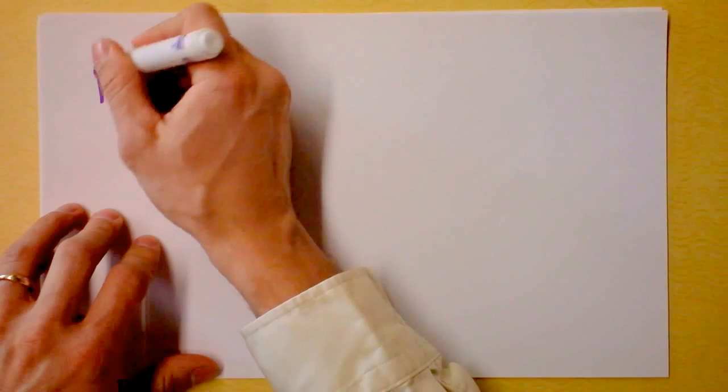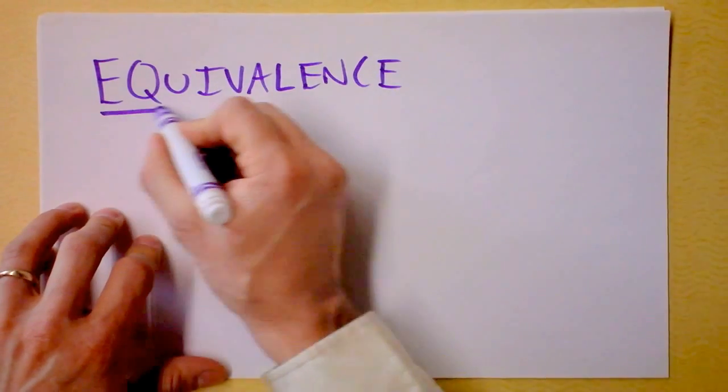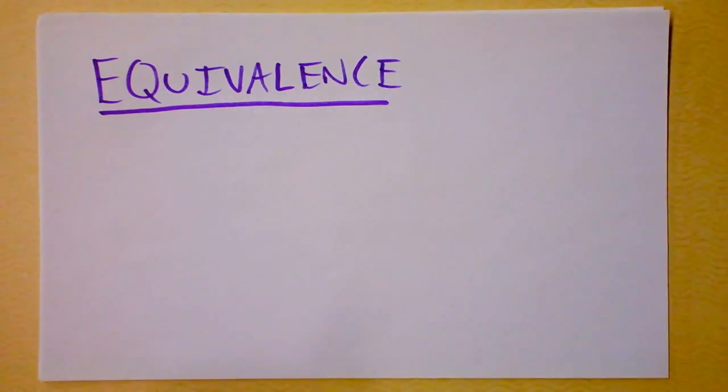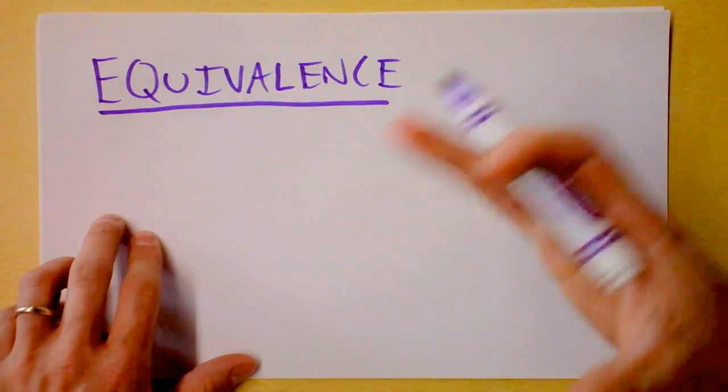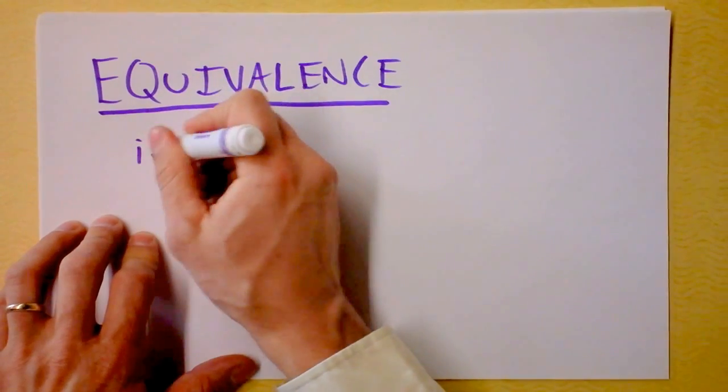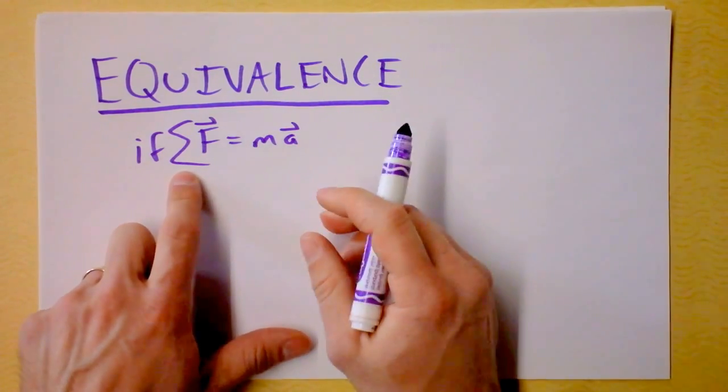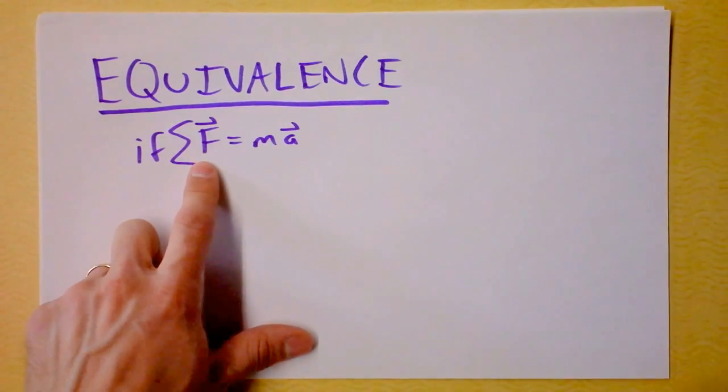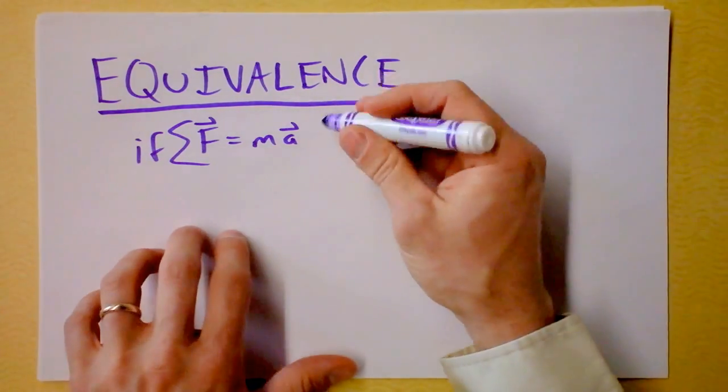So Einstein had two big things to say. One, he said there's equivalence. There are some other things that Einstein said that we're not ready to address yet. But we're going to talk in particular about something called special relativity, and his first statement was equivalence. He said that every law of physics is the same for every inertial reference frame. So this is our first statement of equivalence. If f equals ma, this statement says that Newton's laws are in full operation, so an object with no net force on it does not accelerate.